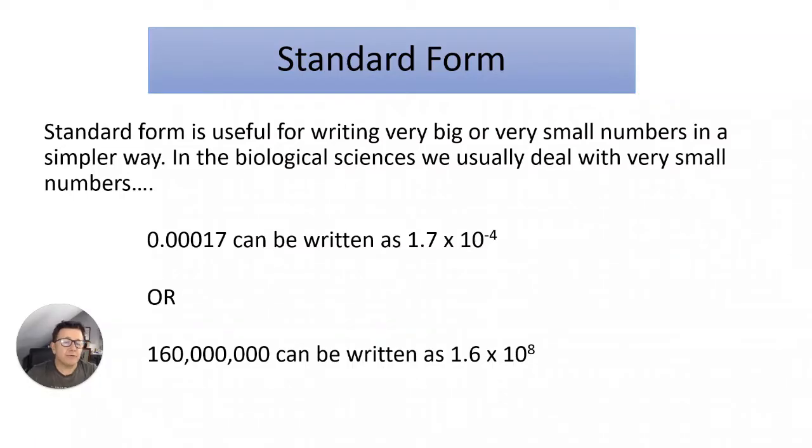Standard form is really useful for writing very big numbers, for example in physics, or very small numbers and that's particularly in biology. So we deal with very small numbers indeed. Here's a couple of examples. A very small number like 0.00017 can be written as 1.7 times 10 to the minus 4, or a rather large number like 160 million can be written as 1.6 times 10 to the 8. Let's look at how you exactly do that.